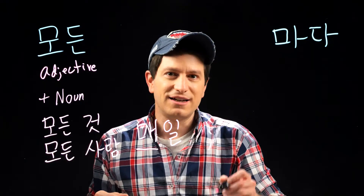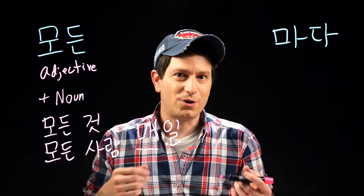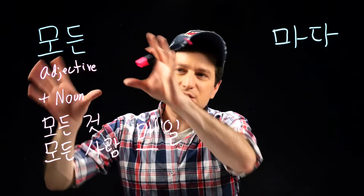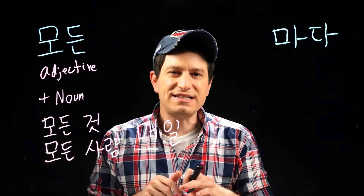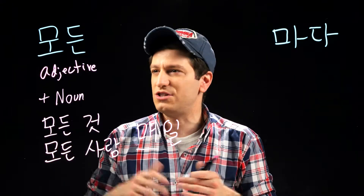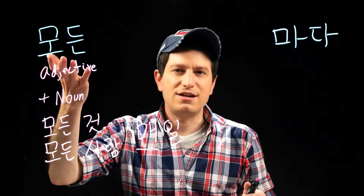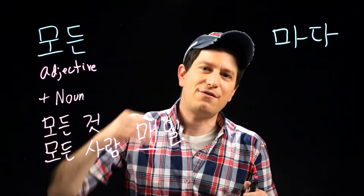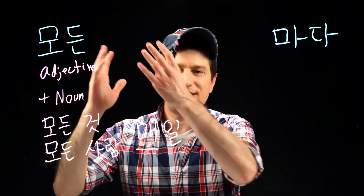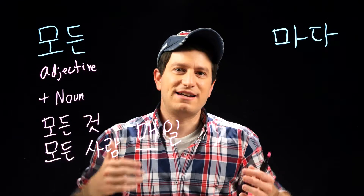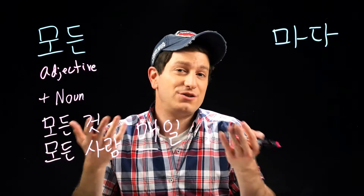I'll put a link in the description for a video I made about how to use 매 separately, so check that out if you'd like to learn more. Overall, 모든 is pretty simple to use — you just take it and attach a noun after it, and it means 'every' of that noun.